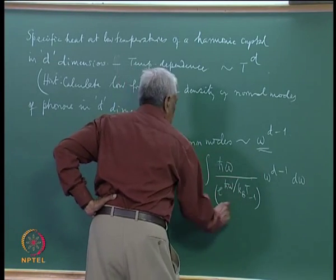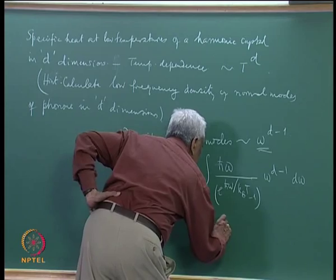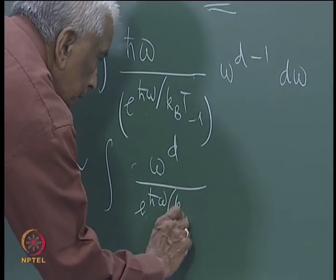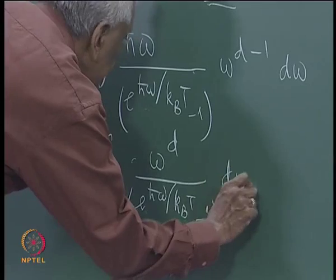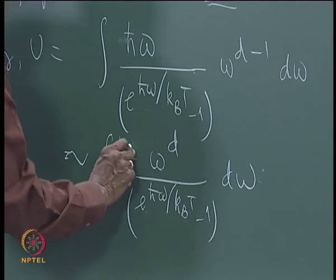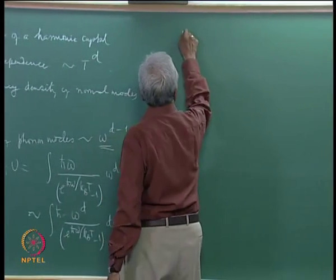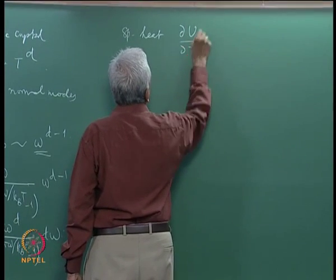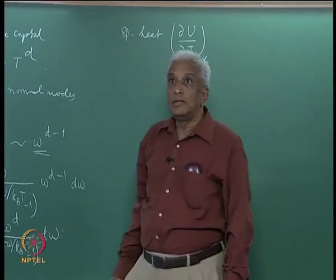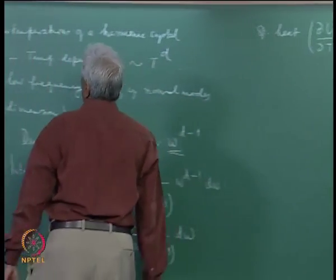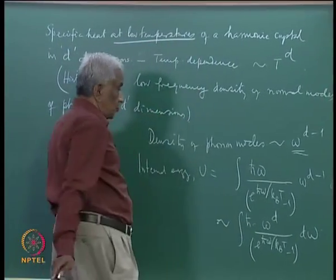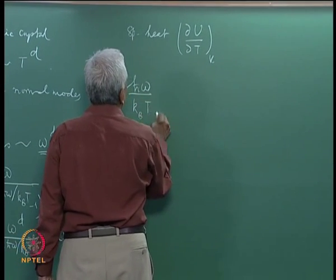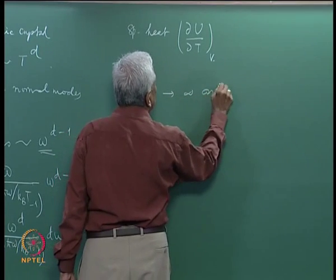The internal energy U goes as the integral of ω^d / (e^{ℏω/k_BT} − 1) dω times ℏ. The specific heat is dU/dT at constant volume. In the low temperature limit, as T → 0, ℏω/k_BT → ∞, and the upper limit of integration effectively extends to infinity.